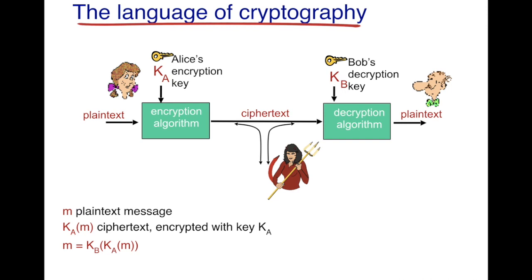To address this, Alice takes a plain text message and converts it to some cipher text, then sends it over the channel. Once Bob receives this cipher text, Bob regenerates the plain text from it. Even if Trudy intercepts the cipher text, Trudy will not be able to get the original plain text message. This is what cryptography helps Alice achieve.